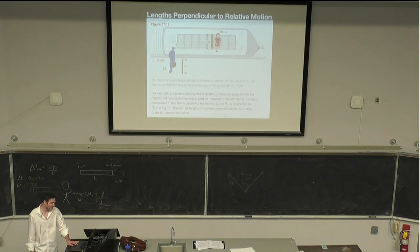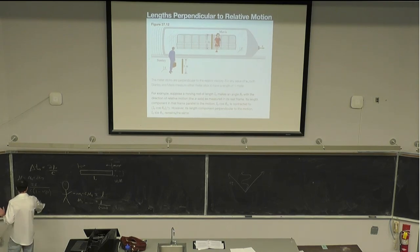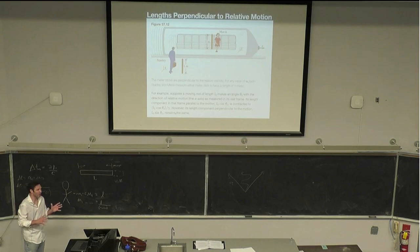L0 cosine theta zero is contracted. However, its length component perpendicular to the motion is L sine theta zero, which remains the same. So it has to do with the fact that we have this relative speed u here. This is why the length contraction doesn't affect the perpendicular motion.